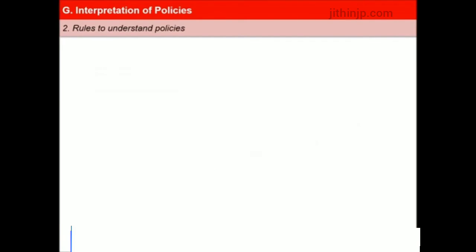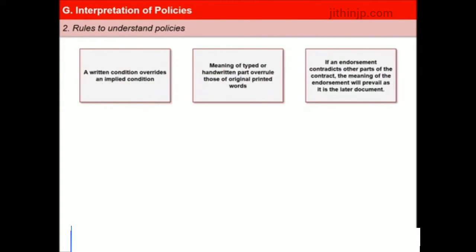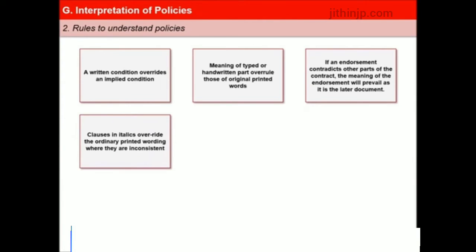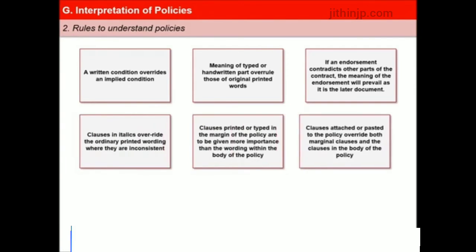Policy wordings are understood and interpreted as per the following rules: an express or written condition overrides an implied condition. In the event of a contradiction between the standard printed policy form and typed or handwritten parts, the typed or handwritten parts are deemed to express the intention of the parties and will overrule the original printed words. If an endorsement contradicts other parts of the contract, the meaning of the endorsement will prevail as it is the later document. Clauses in italics override ordinary printed wording where inconsistent. Clauses printed or typed in the margin are given more importance than the wording within the body of the policy. Clauses attached or pasted to the policy override both marginal clauses and clauses in the body of the policy.